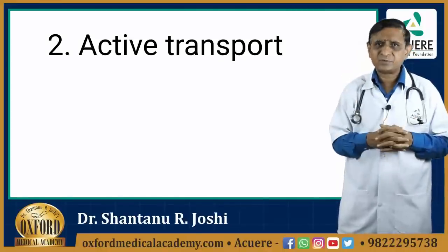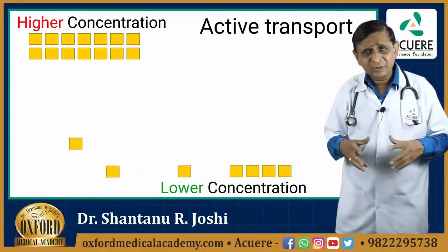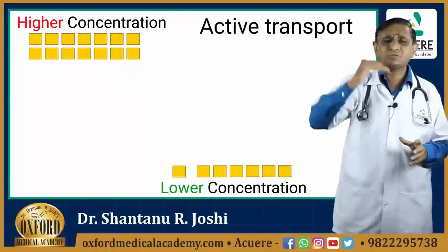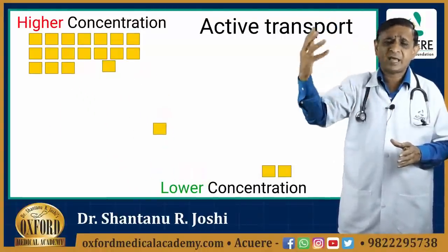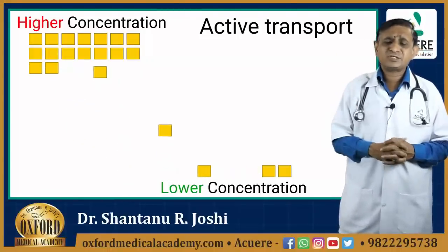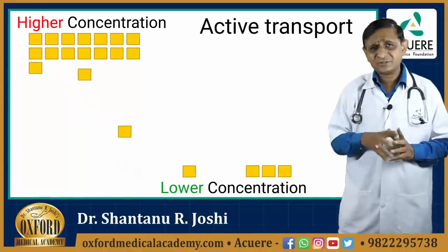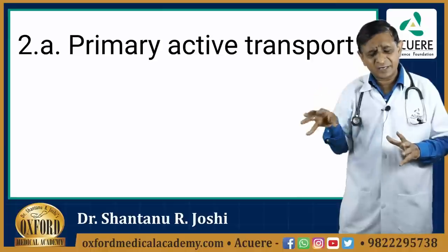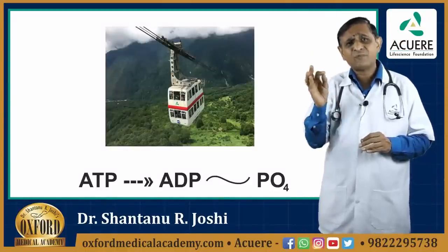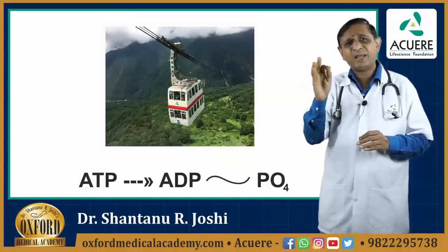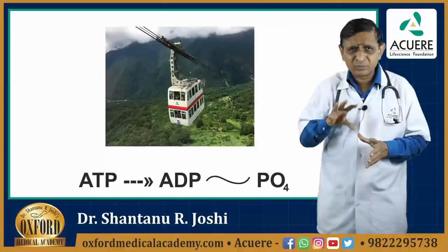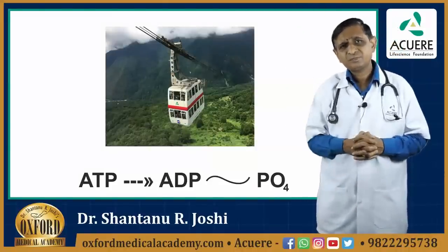Then comes the active transport. As I am using the word active, it needs energy. Because the movement of the drug is from the lower concentration to higher concentration — that is against the direction of the concentration gradient. When we are working against the direction of the concentration gradient, we need to spend energy. That is why active transport needs energy. Active transport is further subdivided into primary active transport, where there is direct utilization of ATP. ATP gets converted and with the breaking of one phosphate bond, energy is liberated. That energy is utilized for the movement of the drug from its lower concentration to higher concentration. This is primary active transport.